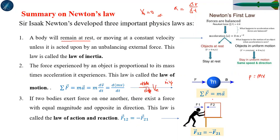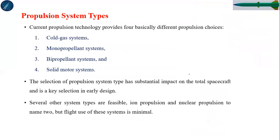Newton's third law — the principle of action and reaction — states that for every action force there exists a reaction force equal in magnitude and opposite in direction. These three Newton's laws are helpful for further discussion. Now, coming to the propulsion system types taken from the textbook: cold gas system, monopropellant system, bipropellant system, and solid motor systems.